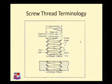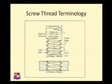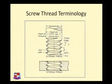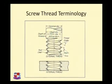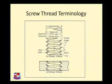Now, screw thread terminology — the third point of today's discussion. This is the nomenclature for screw thread, indicating nominal diameter, major diameter, pitch diameter, and minor diameter. The thread angle is shown, and the distance between two peak points of threads is called pitch. The valley is the root, and the peak point is the crest. The distance between crest and root is the thread depth.